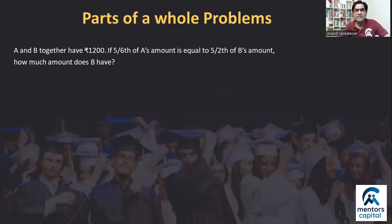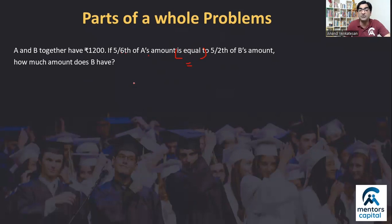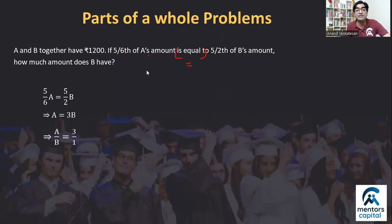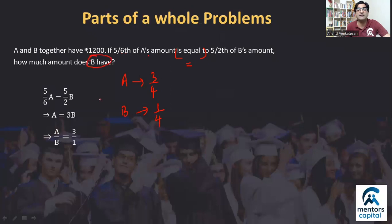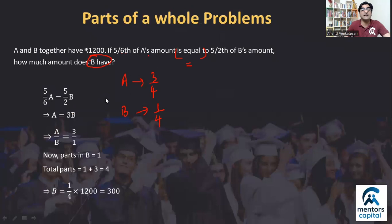Let's apply this to questions. First question: A and B together have 1200 rupees. A word problem states that 5/6 of A is equal to 5/2 of B. From this equation, A = 3B, meaning A:B = 3:1. So the total of 1200 rupees is split into 4 parts — A gets 3 parts (3/4) and B gets 1 part (1/4). Since B's share is asked: 1/4 × 1200 = 300 rupees.